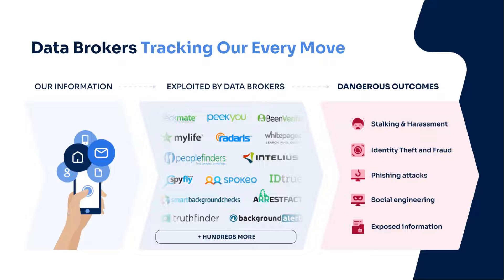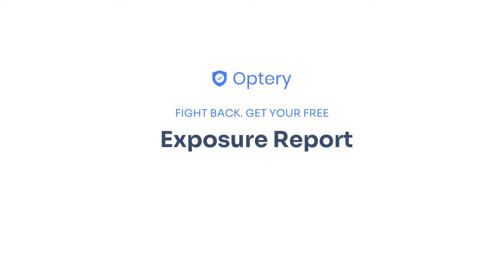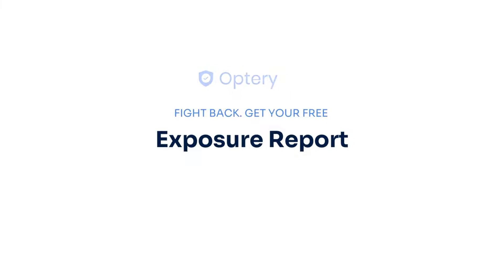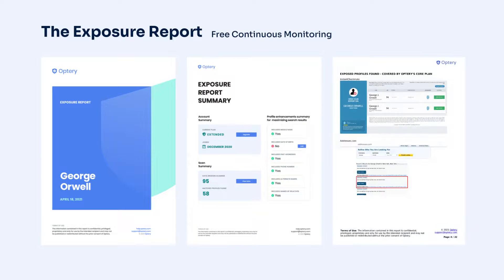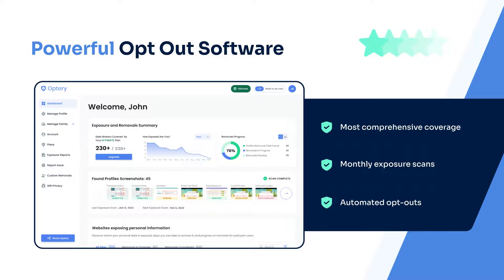However, there are hundreds of people search sites. They are constantly changing, and it's nearly impossible to stay on top of these data brokers. That is why Optory offers the free exposure report. The exposure report shows screenshots from sites that have your data with links to let you see that data right on the site. Use the exposure report and our how-to guides to opt yourself out for free, or sign up for an Optory paid plan, and Optory will handle the monitoring and removals for you and your family members.